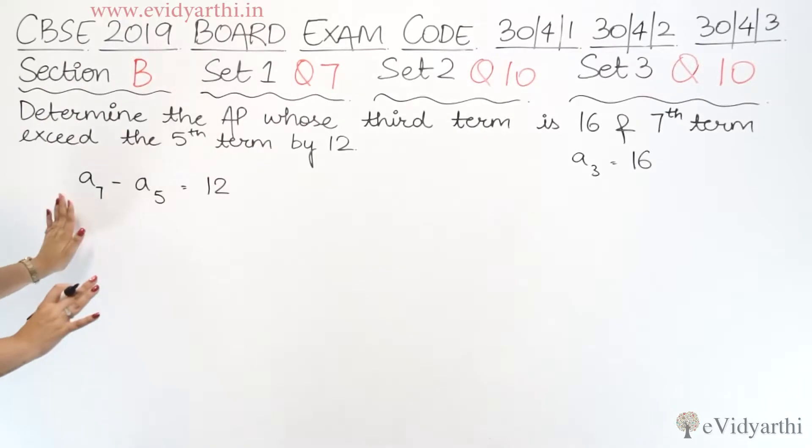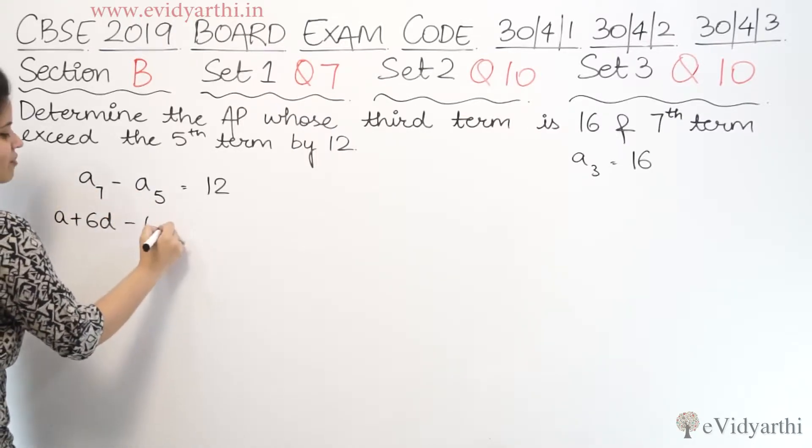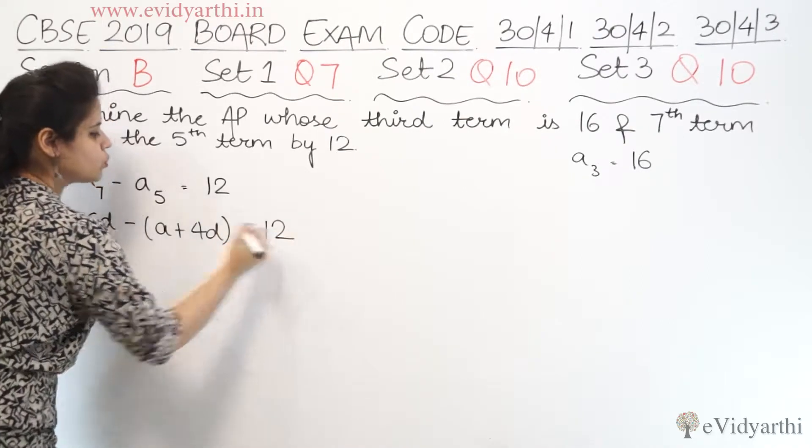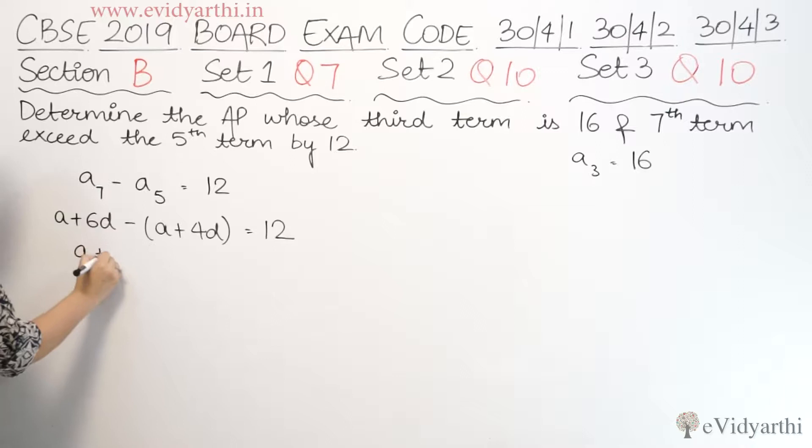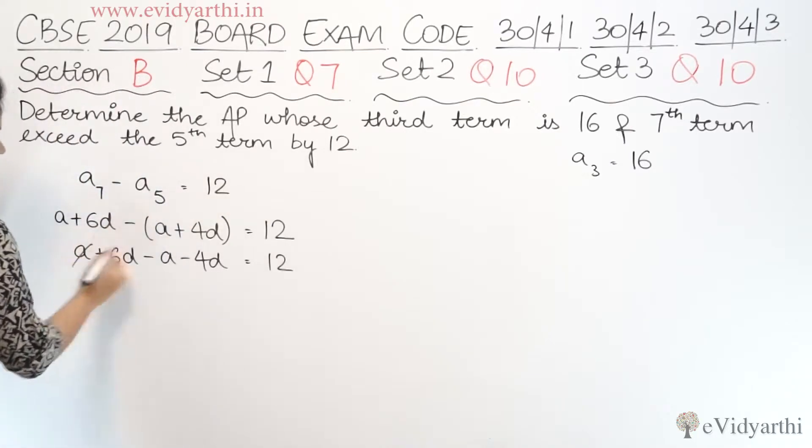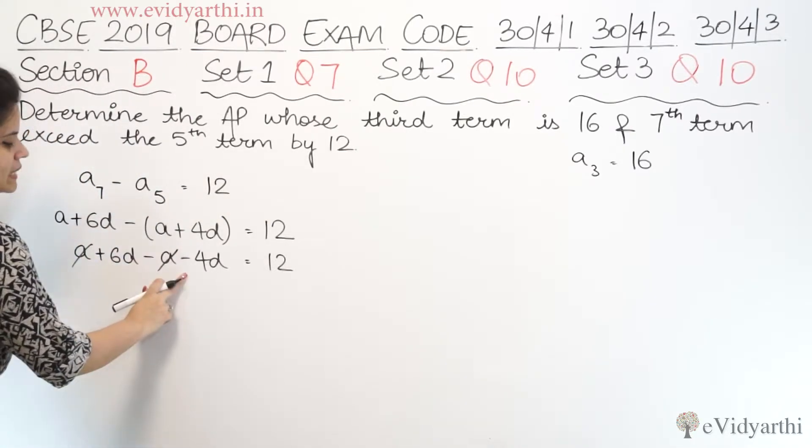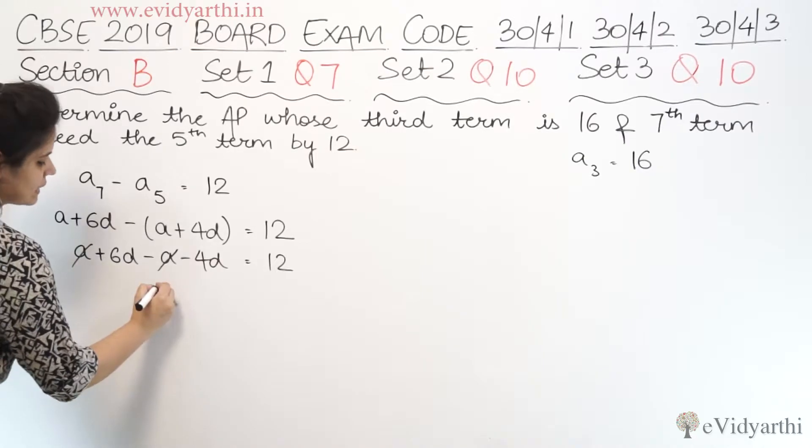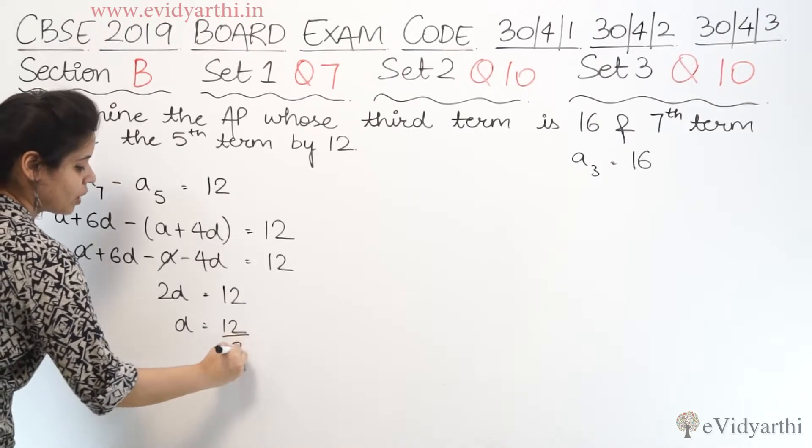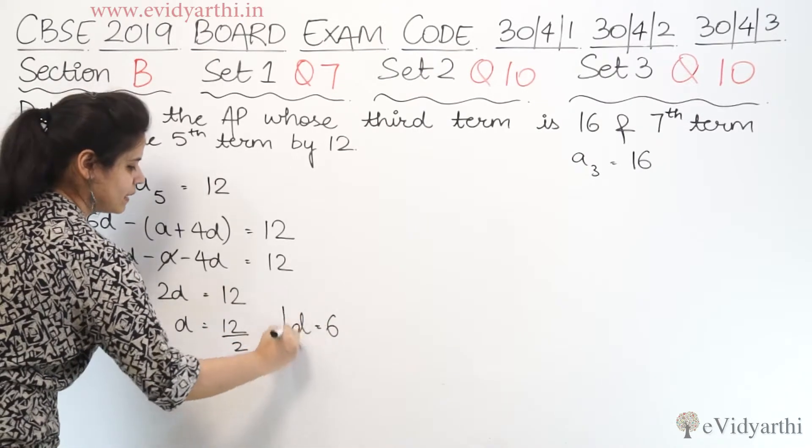The seventh term I can write as a plus 6d minus a5. a5 is a plus 4d. This is equal to 12. Now let's solve this. a plus 6d minus a minus 4d equals 12. a and a cancel. Here we have 6 minus 4 which gives 2d equals 12. And d equals 12 upon 2, which means d equals 6.